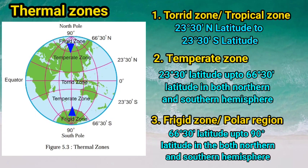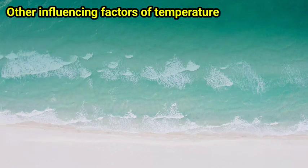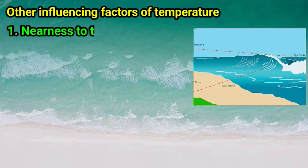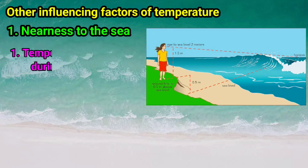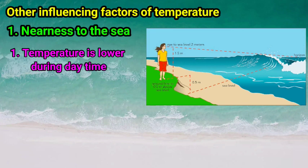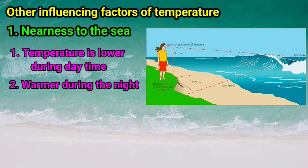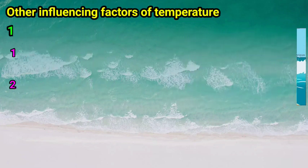Latitude is the main factor that influences the distribution of temperature. Besides this latitudinal factor, there are other factors that also influence the change in temperature and hence local climate. Number one: nearness to the sea. The climate in the coastal region is humid due to nearness to the sea. During the daytime, seawater gets heated slowly, and at night it cools in a slower manner. Therefore, the temperature in the coastal region is lower during the daytime and warmer during the night.